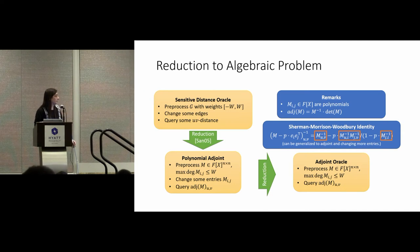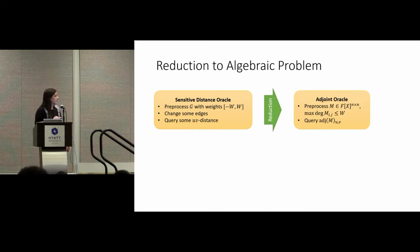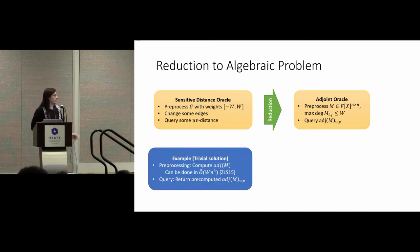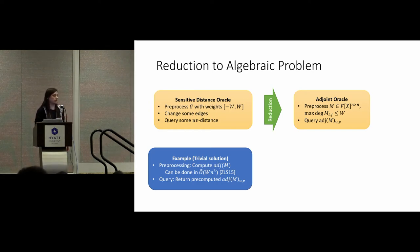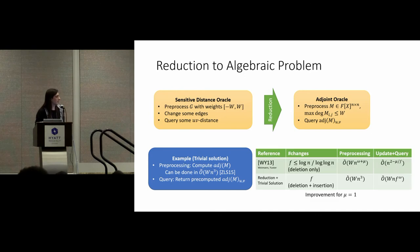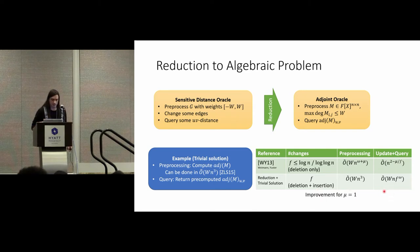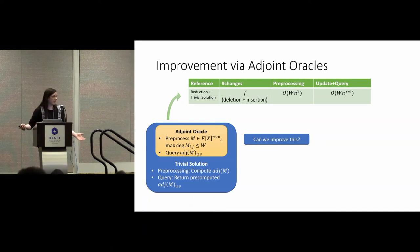So now we want to solve this new adjoint oracle problem. There is a trivial solution: during preprocessing, compute the entire adjoint, and when someone asks for an entry of the adjoint, just return the pre-computed result. Juleban and Stoyan have shown that you can compute the adjoint in roughly n-cubed time. Using this trivial solution and the reduction, we already get an improvement: we can handle any number of deletions, and the scaling in the number of deletions is always linear for any constant f, whereas the previous result becomes roughly n-squared for large f.